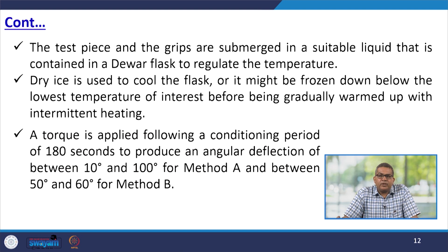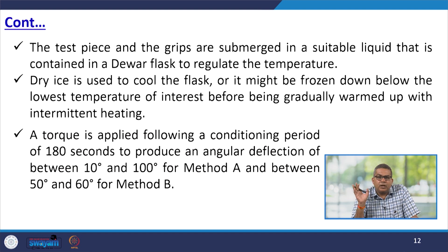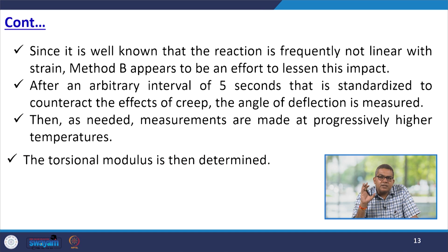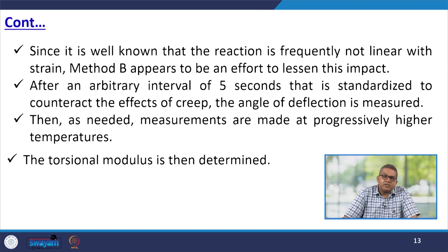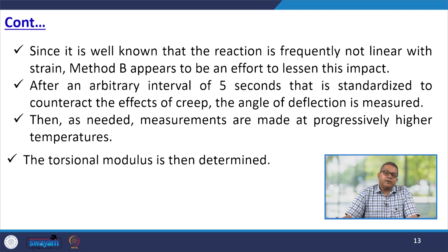A torque is applied following a conditioned period of 180 seconds to produce an angular deflection of between 10 degrees and 100 degrees for Method A, and between 50 degrees and 60 degrees for Method B. Since it is well known that the reaction is frequently not linear with strain, Method B appears to be an effort to lessen this impact. After an arbitrary interval of 5 seconds, standardised to counter the effect of creep, the angle of deflection is measured. Measurements are then made at progressively higher temperatures and the tangential modulus is determined.